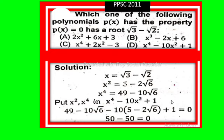plus 1 equals 0. So 49 minus 10√6 minus 10 times 5 is 50, and minus times minus equals plus, so 10 times 2 is 20√6